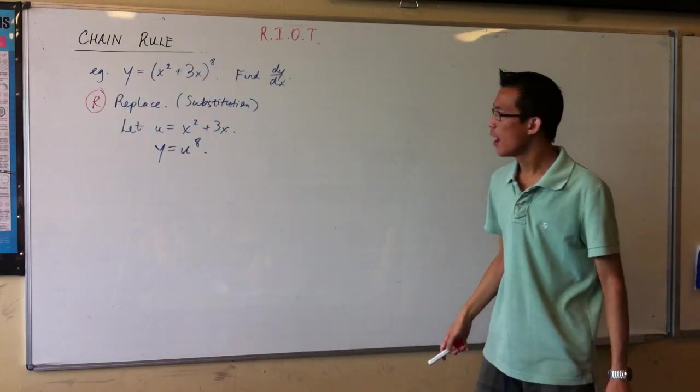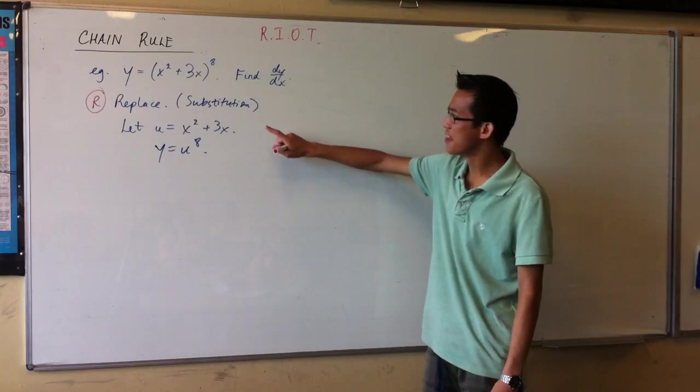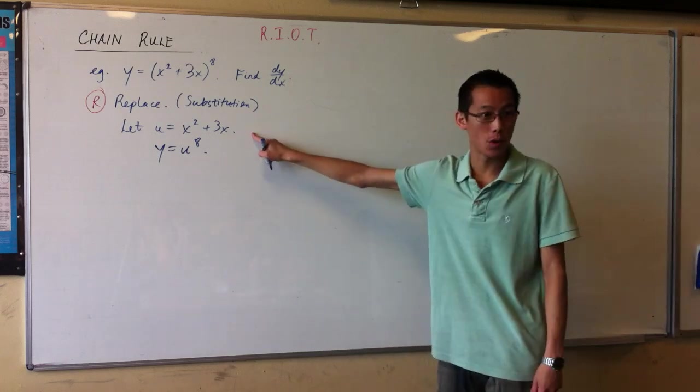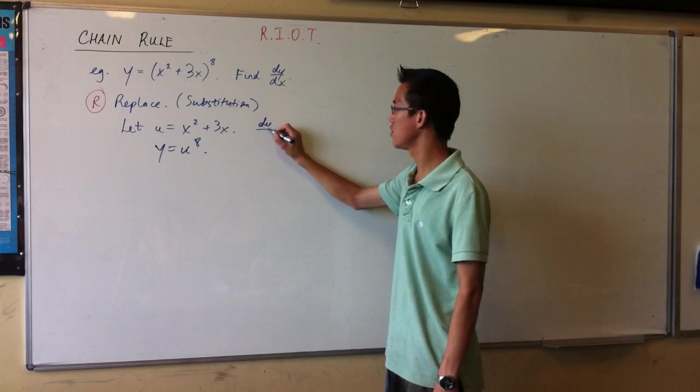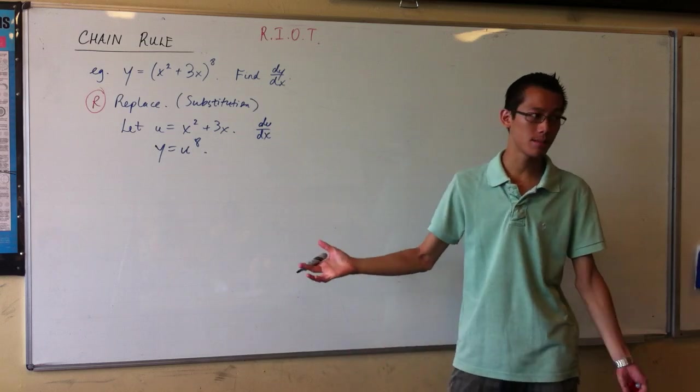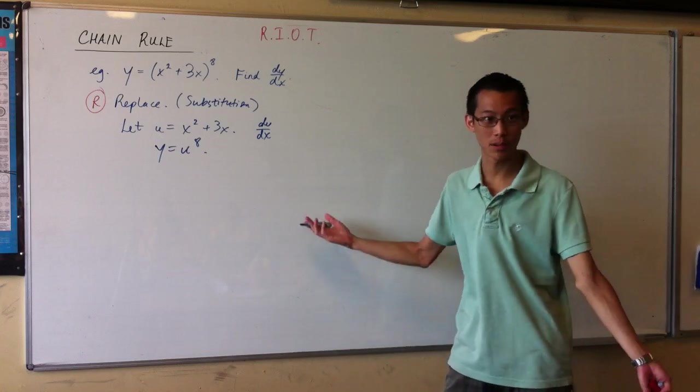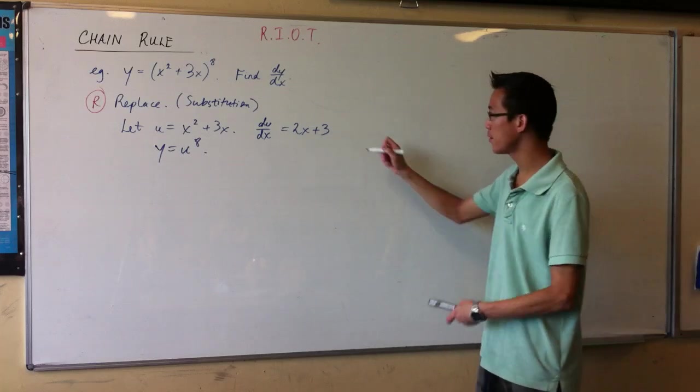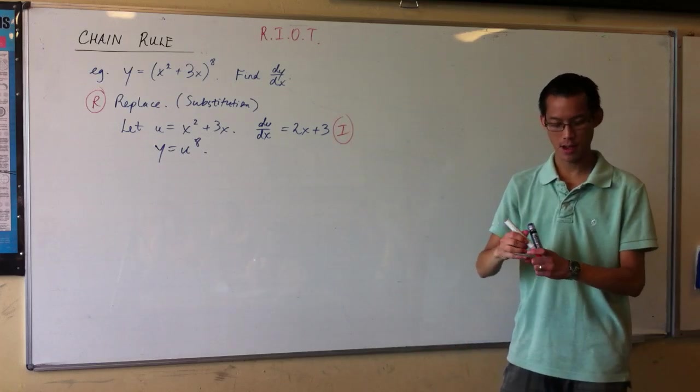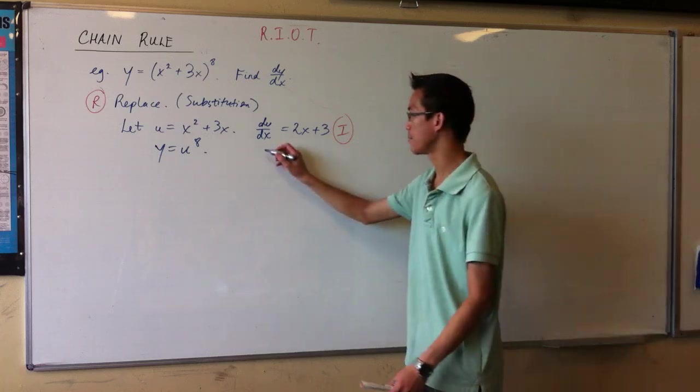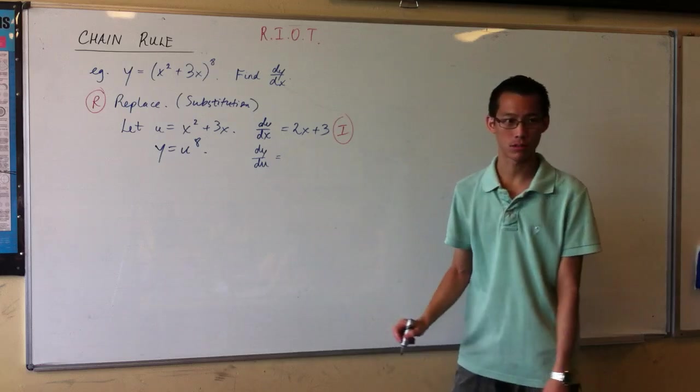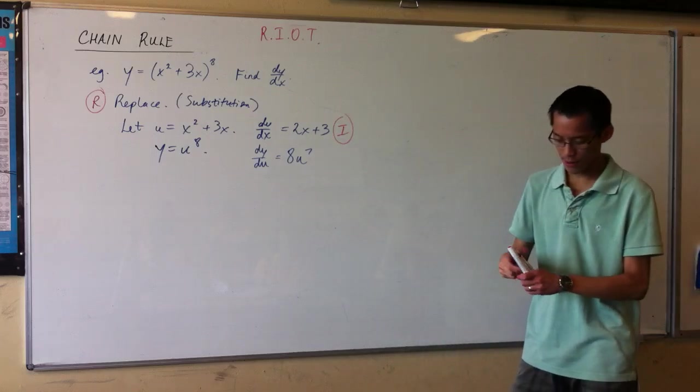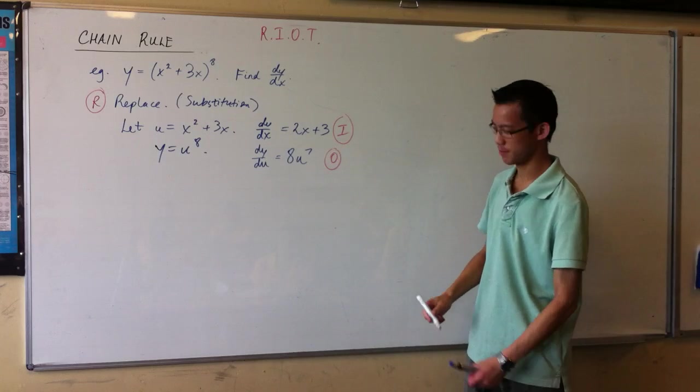Now, what's my second step? I then have to look at these two functions, the inside function and the outside function, and I have to differentiate both of them. So here's my first one, the inside one. So I'll take du/dx, which in this case is 2x plus 3. So there's the first derivative, the derivative of the inside function. And then I look at the outside function, which is just u to the power of 8. So dy/du is equal to 8u to the 7th. So there is my outside function. It's like a donut, but anyway.